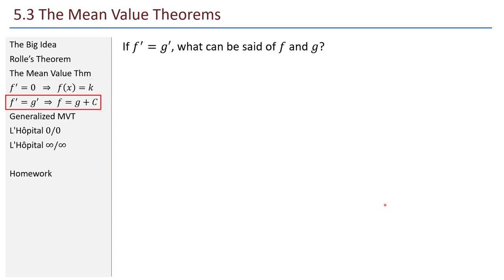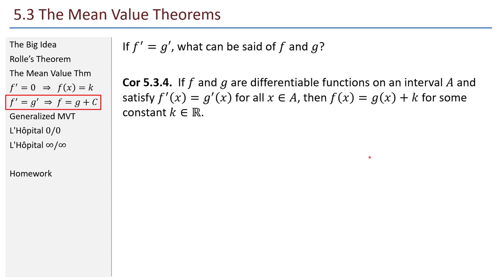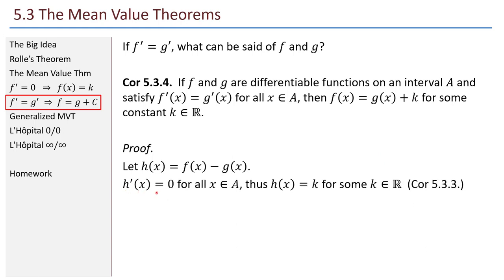If two functions have the same derivative, what can be said? Here's the corollary: if f and g are differentiable functions on an interval A and f'(x) equals g'(x) for all x in A, then f(x) equals g(x) plus k for some constant k. This is an immediate consequence of the previous corollary. Let h be the function that is the difference of those two. Then h'(x) equals 0 for all x. Applying the previous corollary to h, h(x) must equal k for some k. Consequently, f(x) equals g(x) plus k.